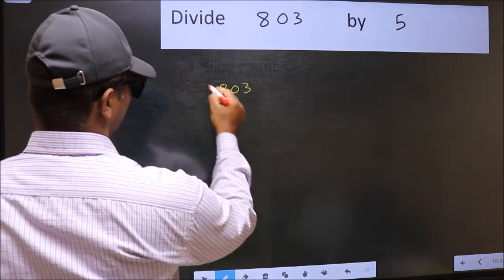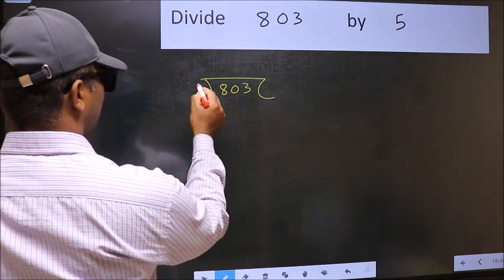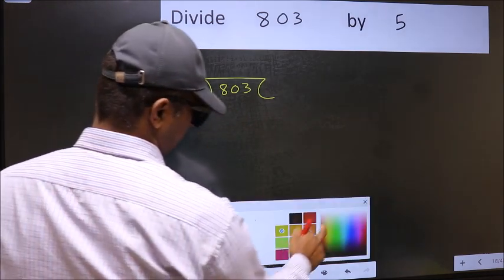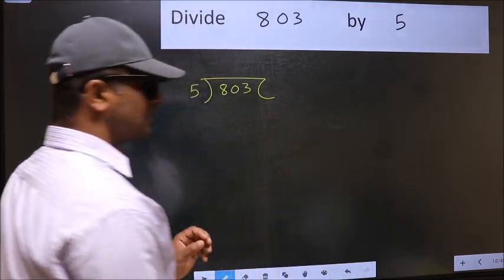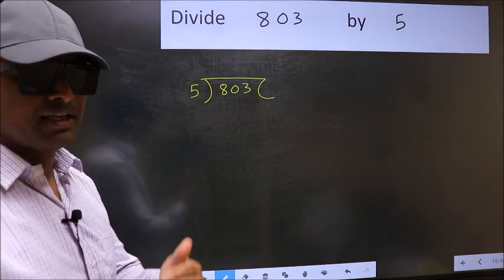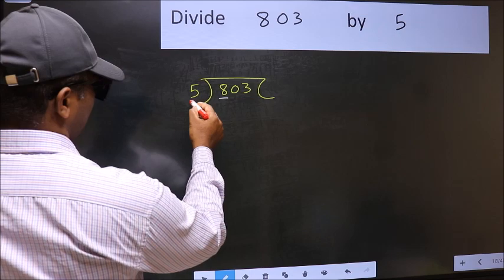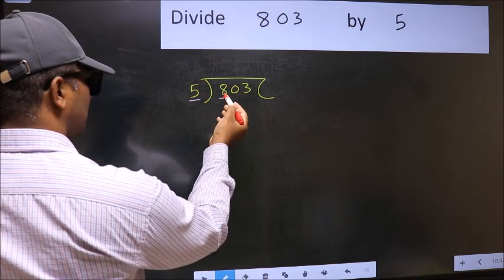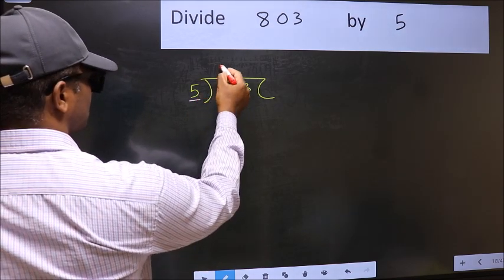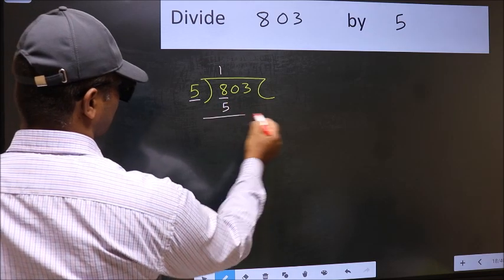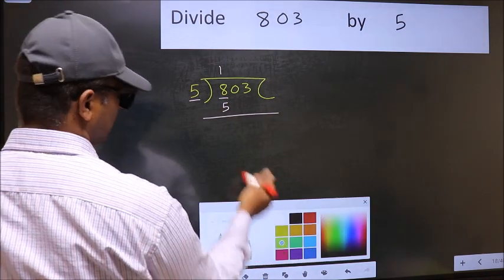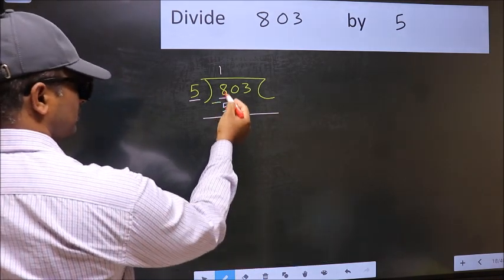803 and 5 here. This is your step 1. Next. Here we have 8 and here 5. A number close to 8 in 5 table is 5 once 5. Now you should subtract. 8 minus 5, 3.